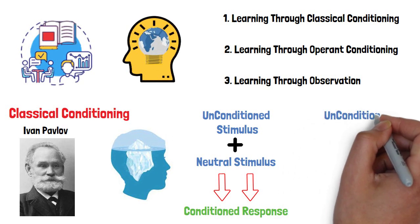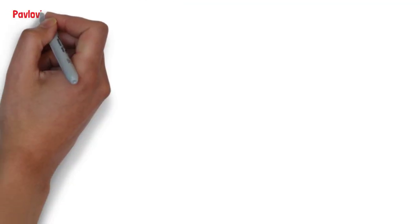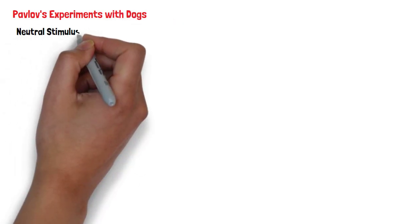In simple terms, classical conditioning involves placing a neutral stimulus before a naturally occurring reflex.